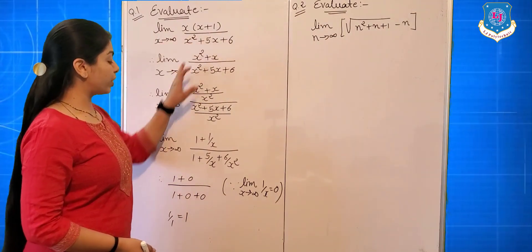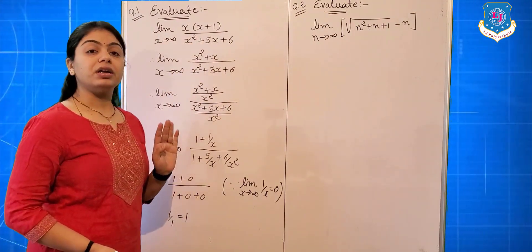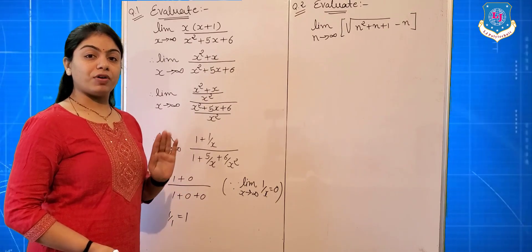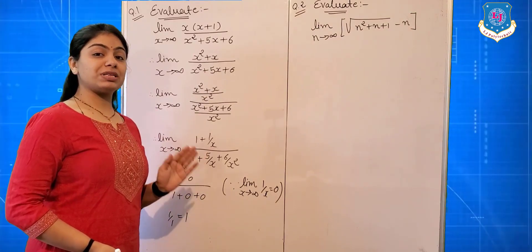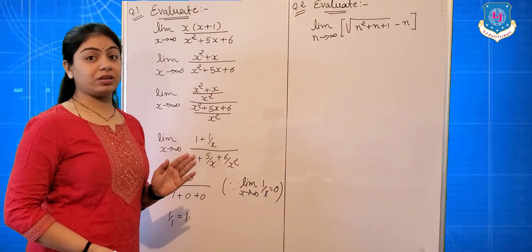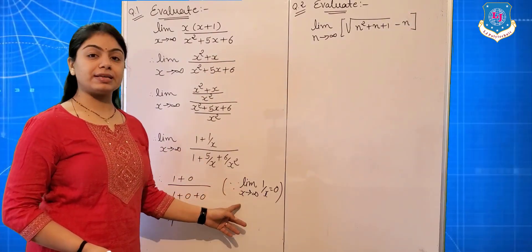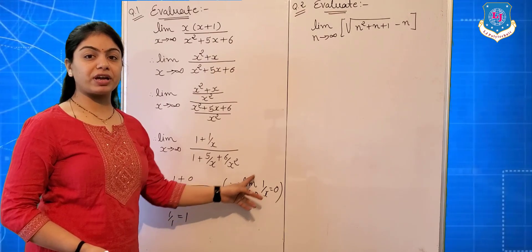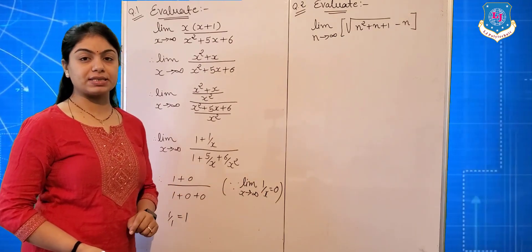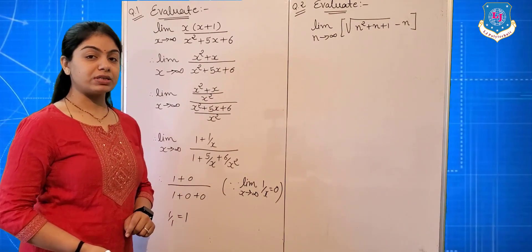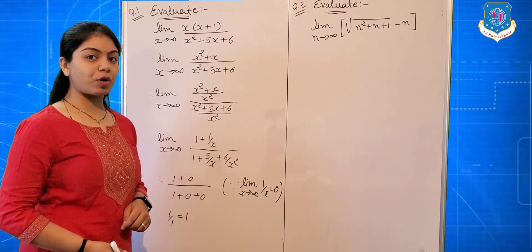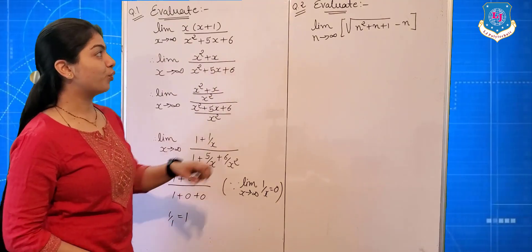You can use the standard form here — our fourth standard form — which is limit x tends to infinite, 1 upon x is equal to 0. The next question is of the same type.